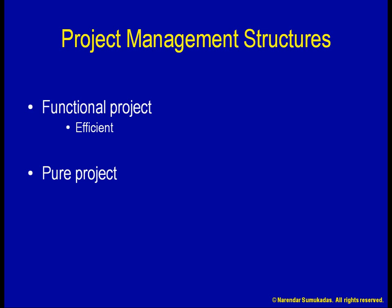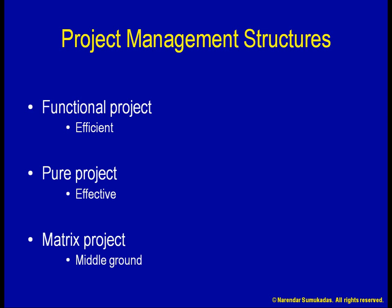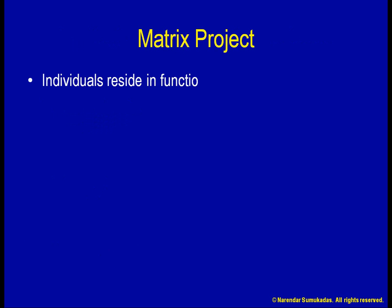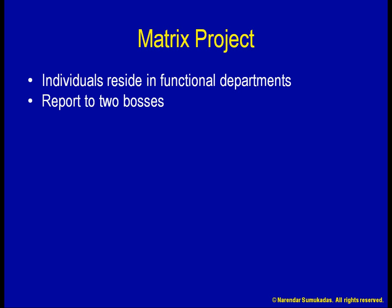We would like the efficiency of the functional project structure together with the effectiveness of the pure project structure. A middle ground is found in the matrix project structure. Here, the team members remain in their functional departments and work on other things besides this project. They report to two bosses: one being their functional boss and the other being you, the project manager.